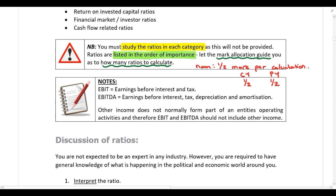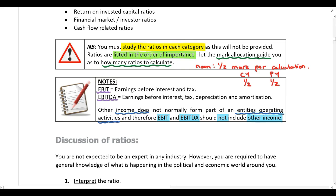Just some important terminology before we get onto the ratio calculations. EBIT is earnings before interest and tax. And EBITDA is earnings before interest, tax, depreciation, and amortization. It's important to note that if you are required to perform any ratio calculations that use either EBIT or EBITDA, you should not include other income in this calculation. Other income does not form part of an entity's normal operating activities — if it did, it would be classified as revenue and not other income. So you should not include other income when calculating any ratios that use EBIT or EBITDA.